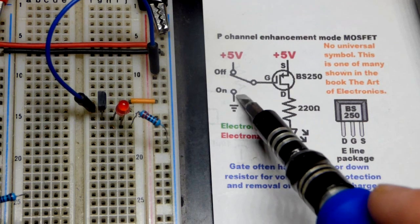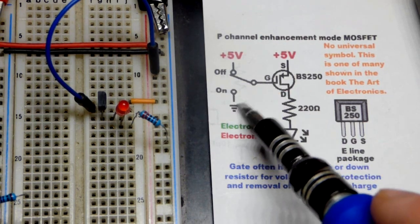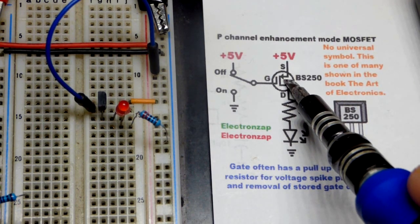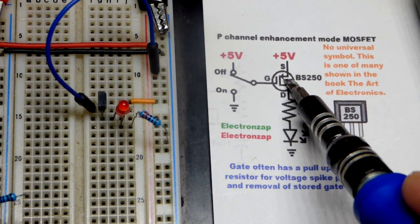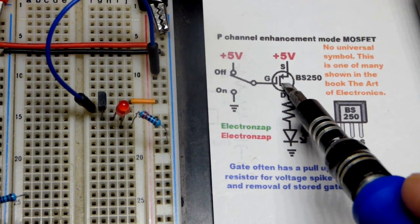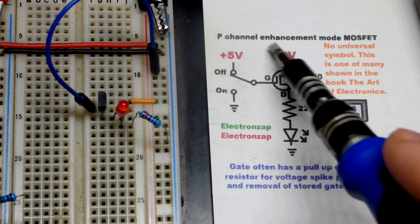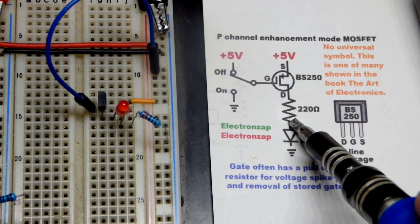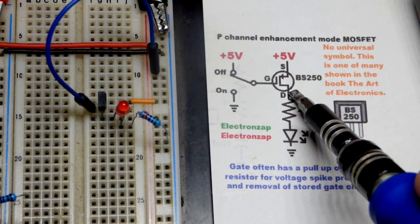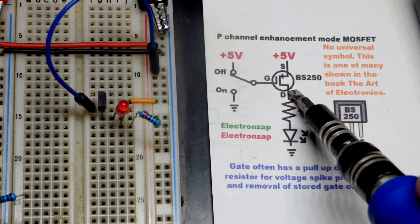So since it's P-channel enhancement, that means we want to get the gate more negative. That makes the channel more positive, pushes electrons out of it. And the way that it's built, that means that it's going to conduct better when it's a P-channel enhancement right there. And once it's conducting, it's basically conducting freely.